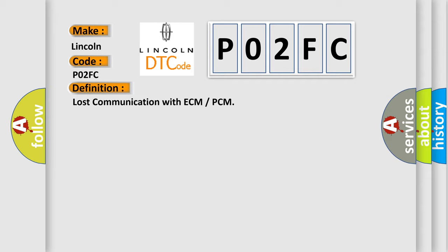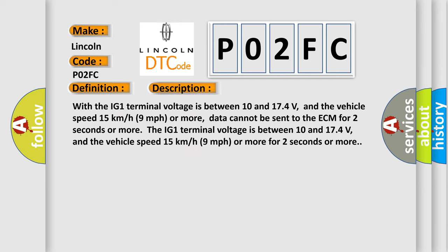And now this is a short description of this DTC code. With the IG-1 terminal voltage between 10 and 174 volts, and the vehicle speed 15 kilometers per hour or more, data cannot be sent to the ECM for 2 seconds or more. This diagnostic error occurs most often in these cases.